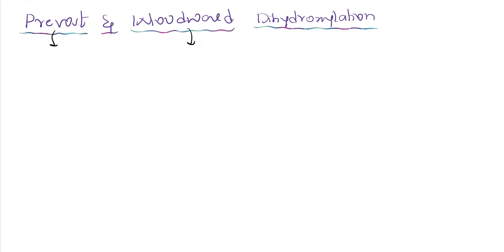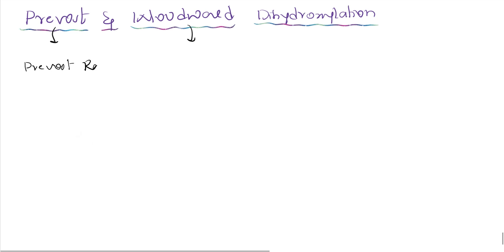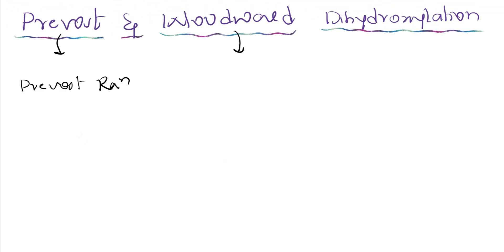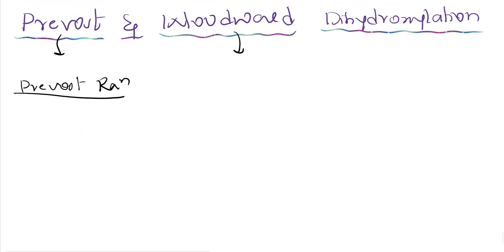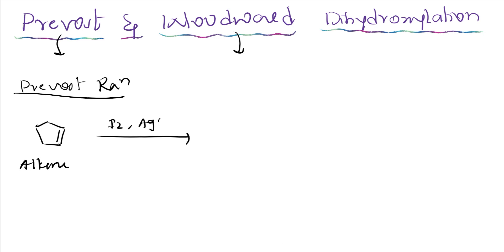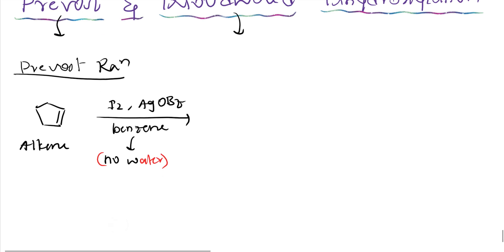First let me discuss about the Prevost reaction. In this reaction, the reactant must be an alkene — that is the condition. To this alkene, we add iodine in the presence of a silver salt compound, AgOBz. Benzene is used as a solvent. One important thing to remember: during this step, no water should be present. Non-polar conditions are maintained.